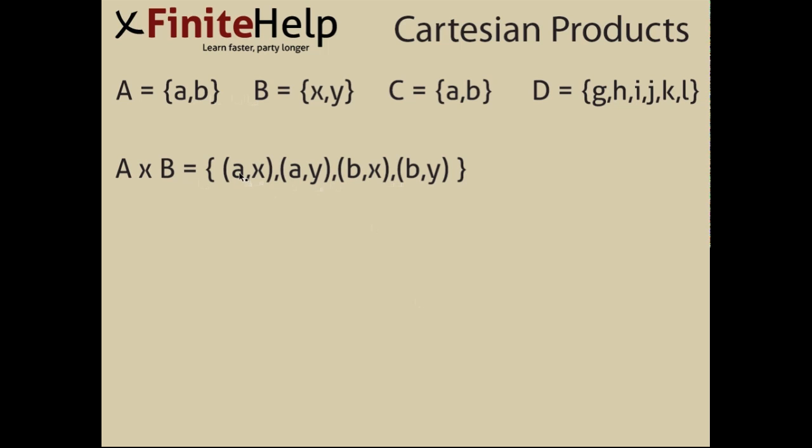This is correct because the only way you could get this wrong is if you left out one of the ordered pairs, or if you put an element from B before an element from A. That would be B times A, not A times B. So remember, it does matter what order the elements are in.